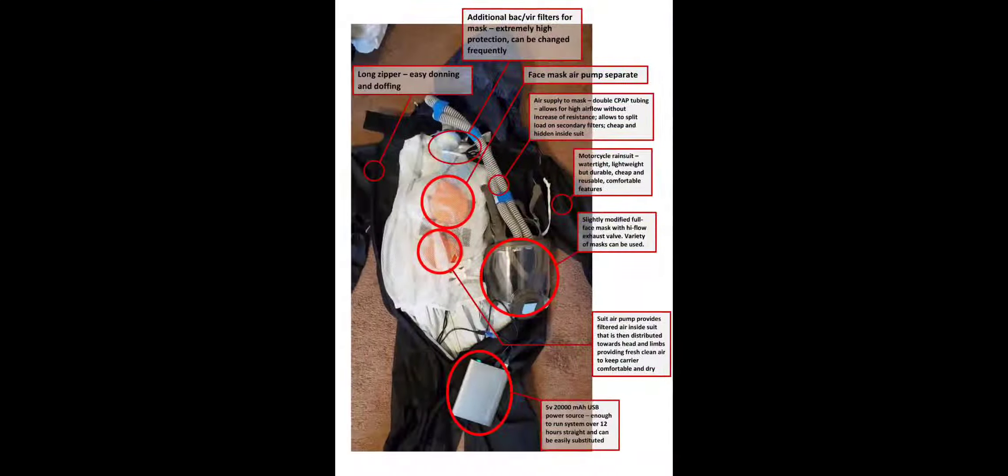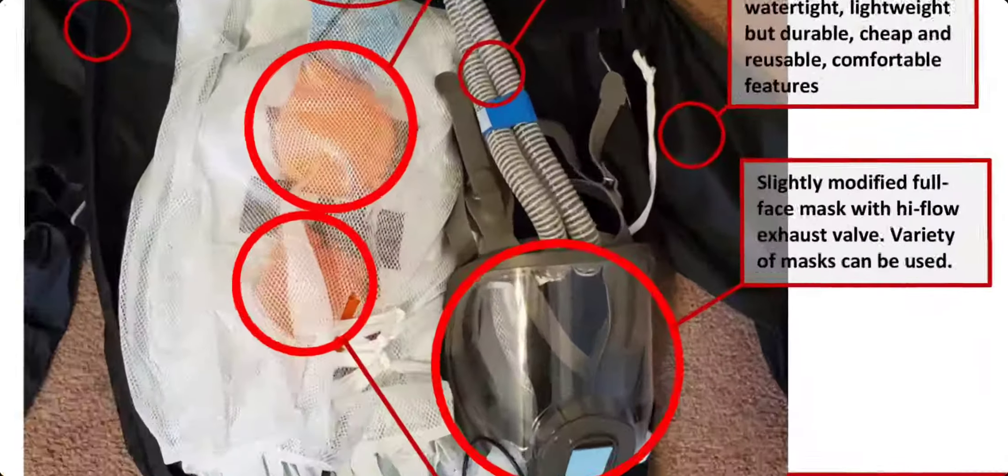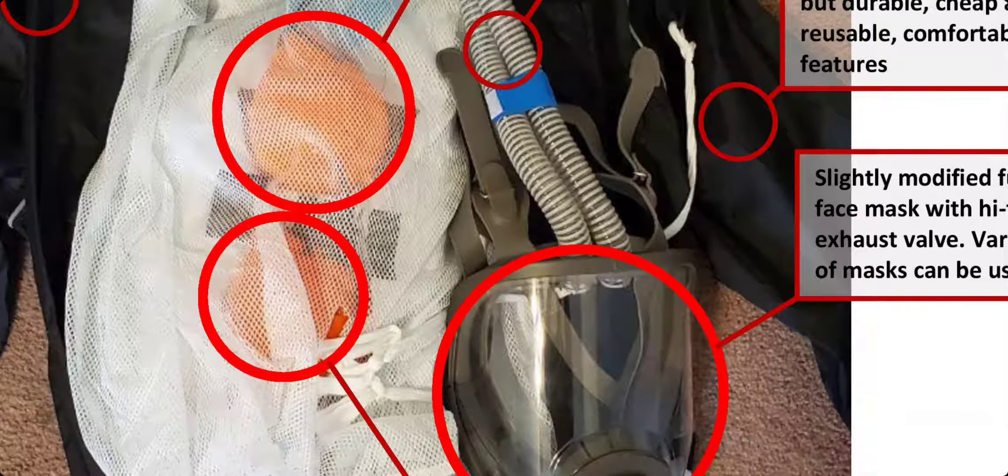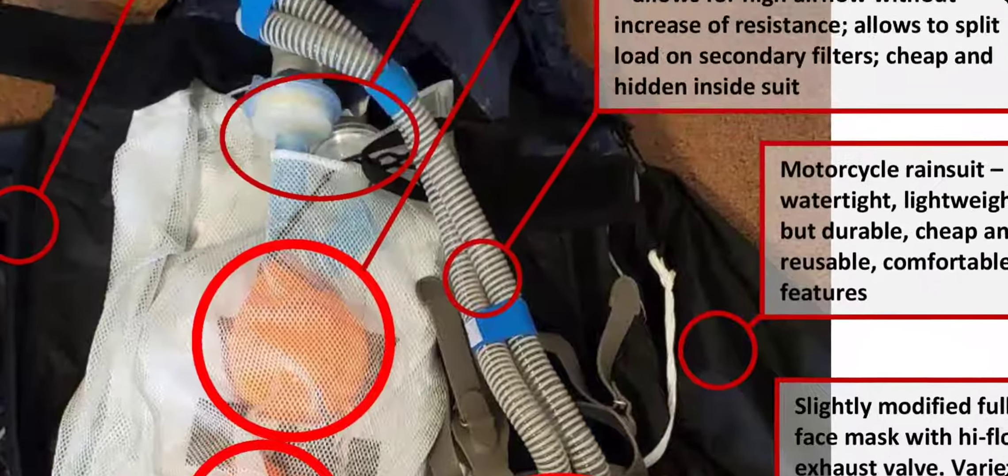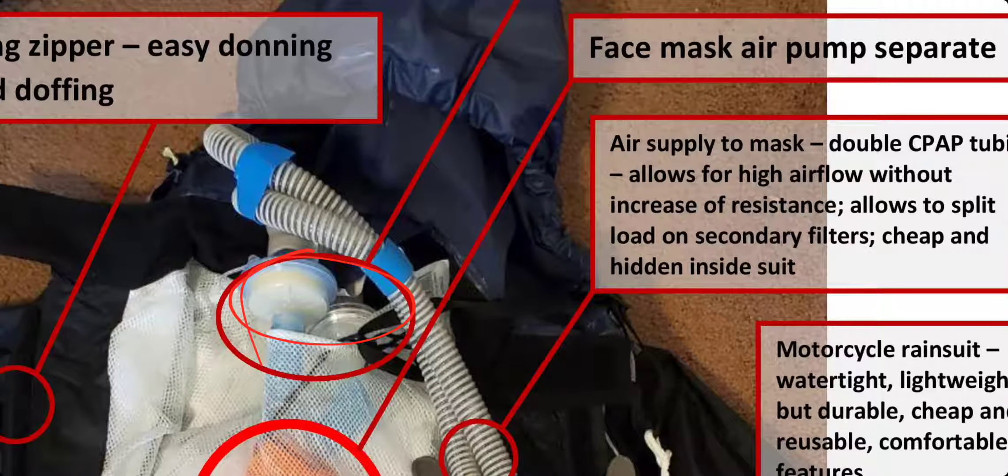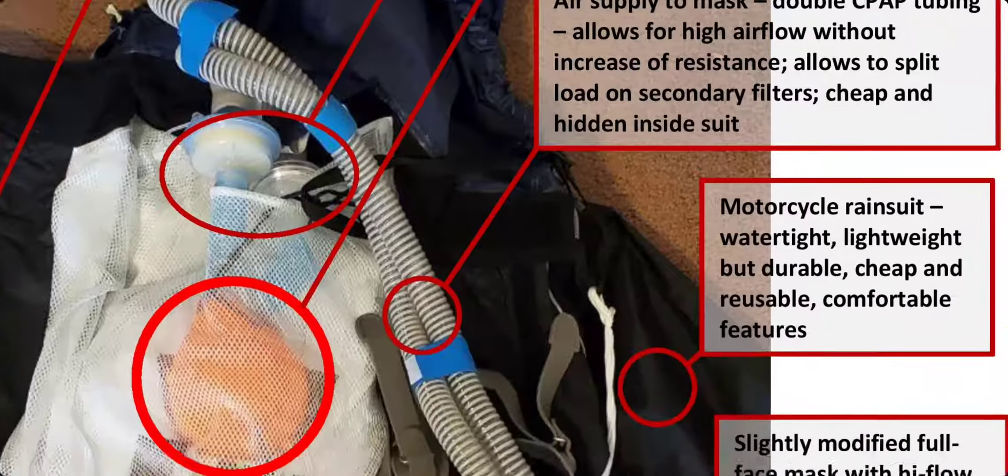If you look at it, it has a huge HEPA filter that doesn't allow any particles to enter the suit. But more than that, as you can see, it's all blown up because it's inside ventilated. There are two pumps where one of those pumps blows the air inside, keeping the inside of the suit cool and comfortable. And the other pump uses extra two filters and sends this air to the mask.